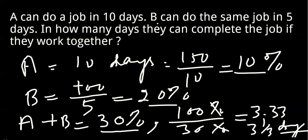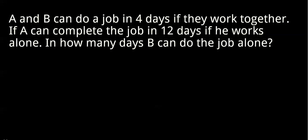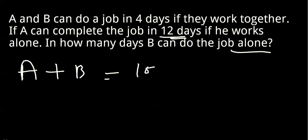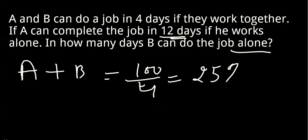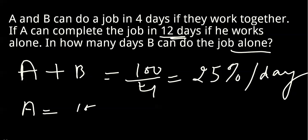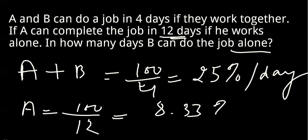Next question: A and B together can do a job in 4 days. If A can complete the job in 12 days working alone, in how many days can B complete the job alone? The combined efficiency of A and B is 100 divided by 4, which equals 25% per day. A's efficiency is 100 divided by 12, which equals 8.33% per day.